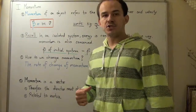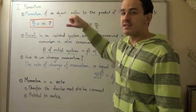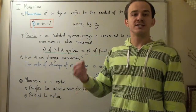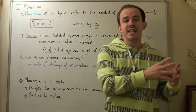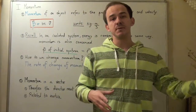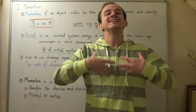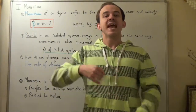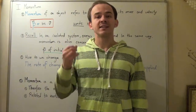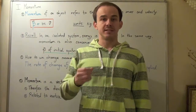The more momentum an object has, the more mass it has — if velocity is the same — and therefore the more inertia that object has. For example, if object A is traveling with a larger momentum than object B, then object A has more inertia, meaning a higher net force will have to act on that object to stop or change its momentum.